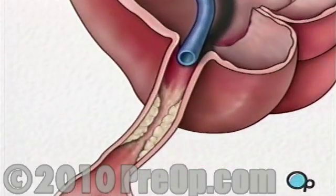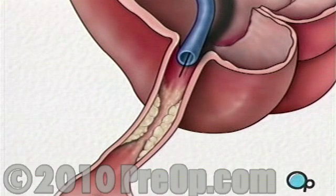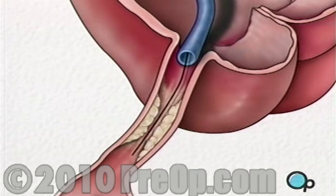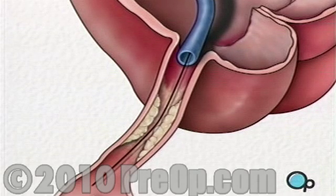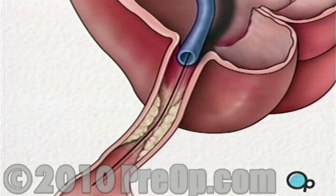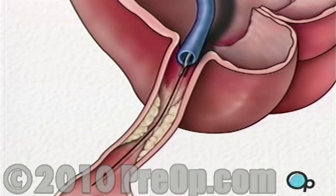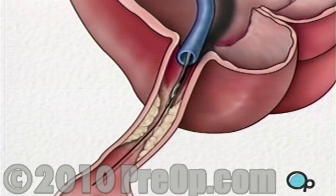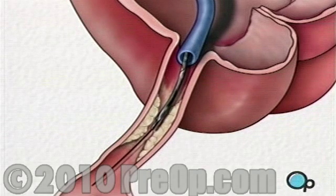Once the restricted area has been identified, a thin wire is inserted into the catheter and is guided all the way to the blocked area and then slightly beyond. This wire acts as a guide for the balloon catheter. It allows your doctor to position the deflated balloon precisely in the middle of the narrowest part of the coronary artery.